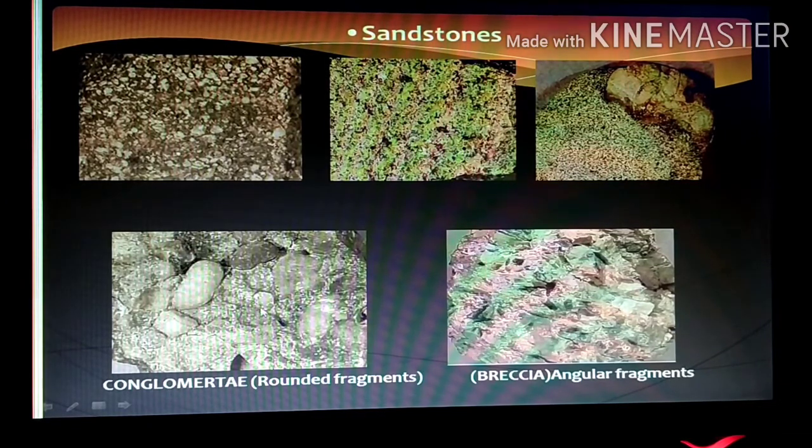So, we consider this type of clast as rounded clast or we can say is a conglomerate rock is formed by this clast. And here you can see the angular fragments of the clast. That's why the rock which is formed by this angular clast is known as breccia.